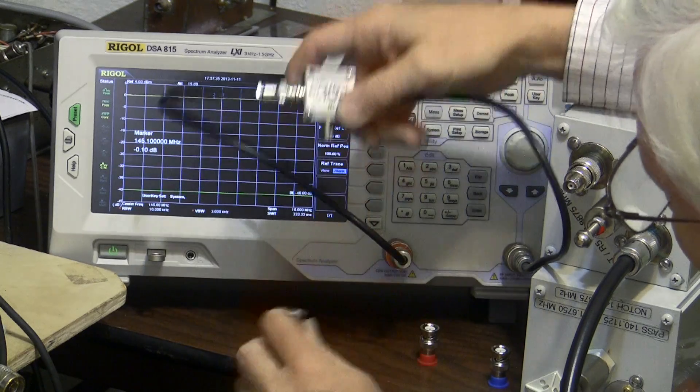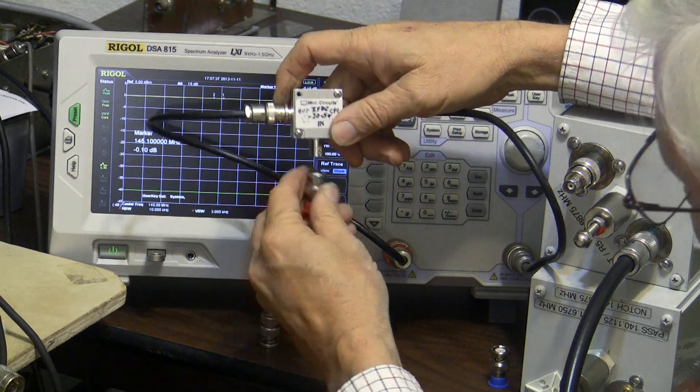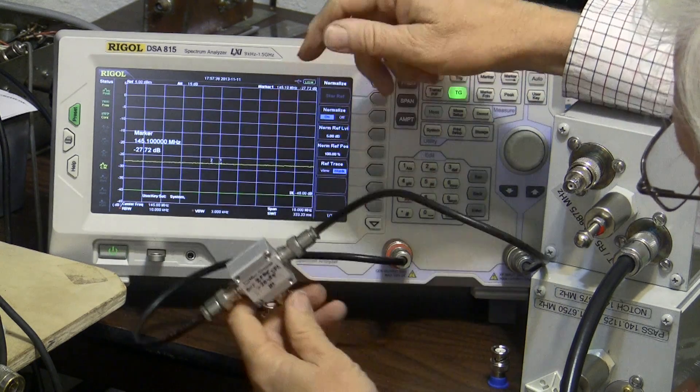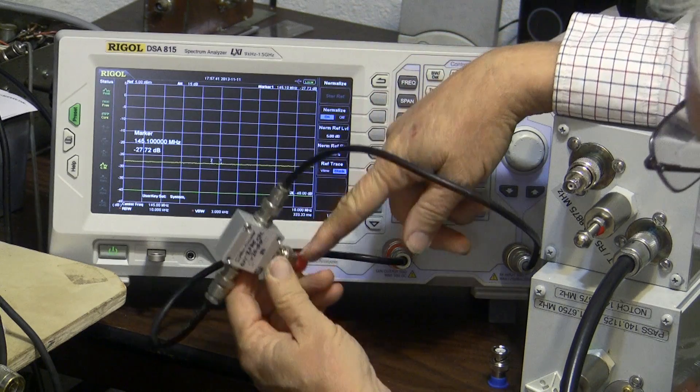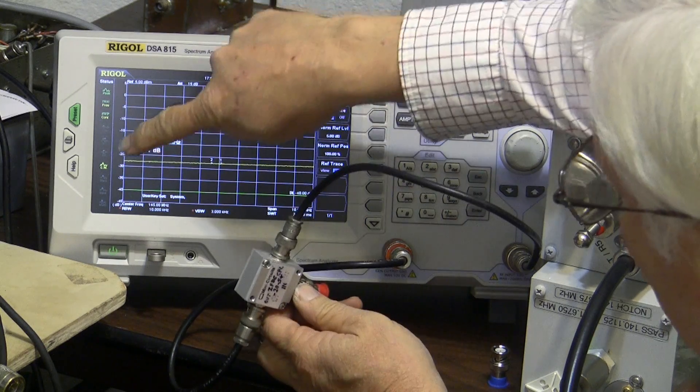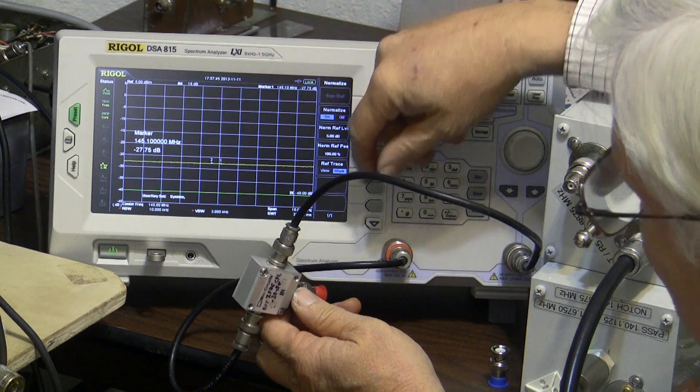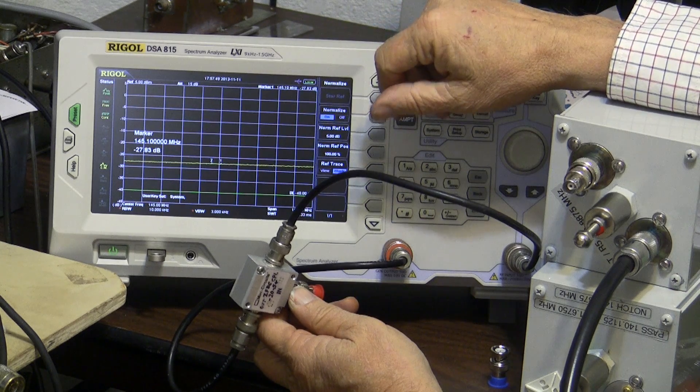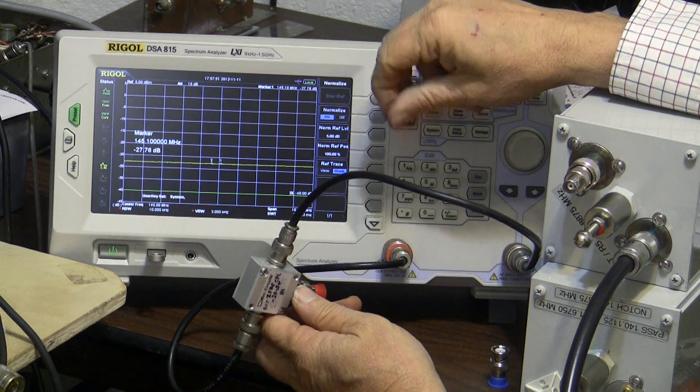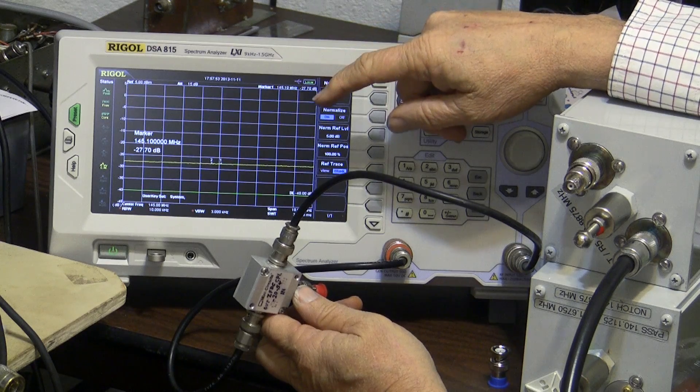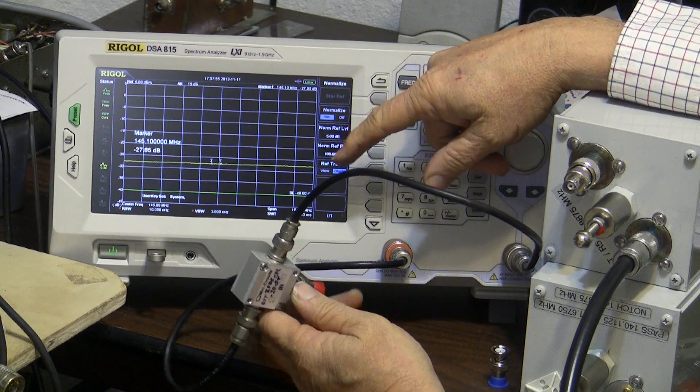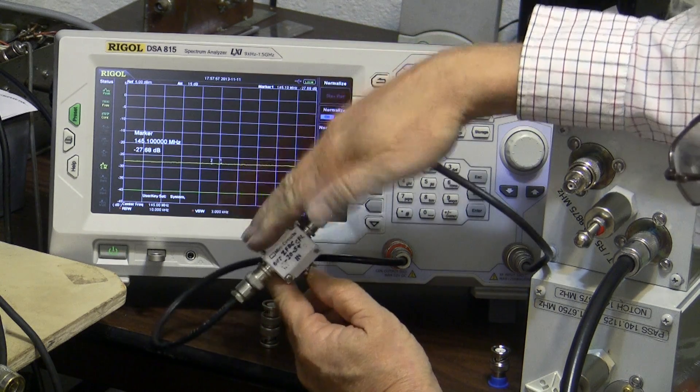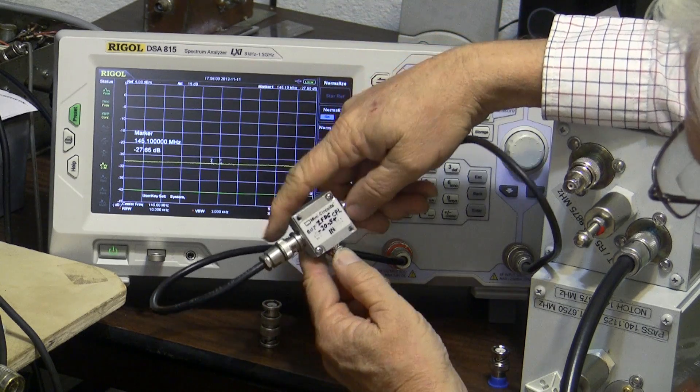So if I take this little puppy off, just for grins, we'll put the load on here. This is a 50 ohm load, and it gives us 27, almost 28 dB. So 28 dB of return loss is good in anybody's book, and it's about in the capability of this particular product from Mini-Circuits.